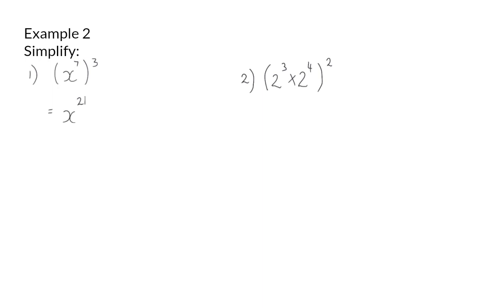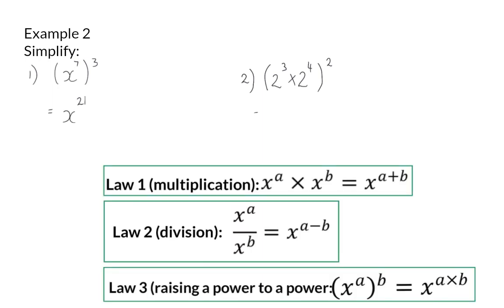In number 2, I can now apply two exponential laws. Firstly, I am going to simplify inside the bracket. Inside the bracket, I am going to use the first law because I am multiplying. That means the base will stay at 2. And to determine the exponent, I will add the two original exponents to get 2 to the power of 7. Next, I am going to use the third law because I have one base and two exponents. So I am going to multiply the two exponents to get 2 to the power of 14.